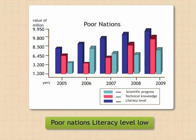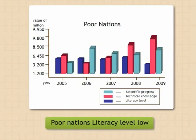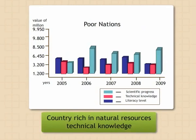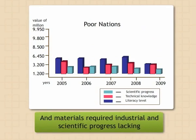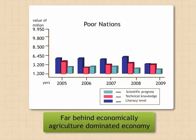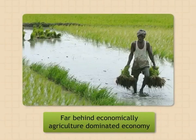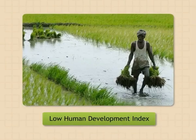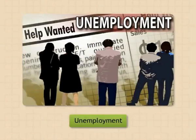The poor nations are those where the literacy level is very less. Due to which, although the country is rich in natural resources, the technical knowledge and materials required for industrial and scientific progress is lacking. Thus, such nations are far behind economically. These nations have an agriculture-dominated economy. They are placed low on the human development index and have to deal with problems like poverty, unemployment, less social progress, and political instability.